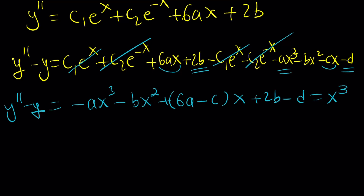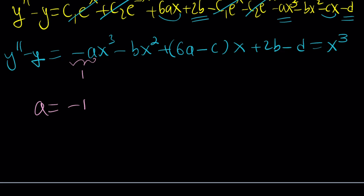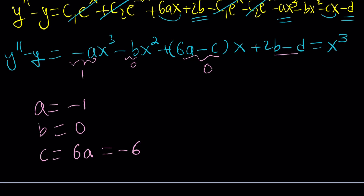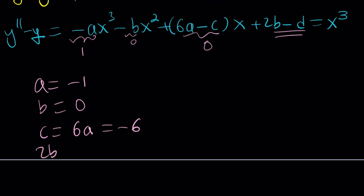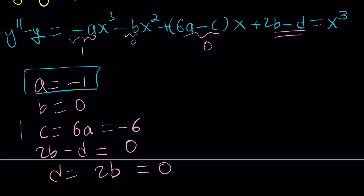We got a polynomial equation, which is easy to solve since it holds for all x values. The coefficient of x cubed must be 1, so negative a equals 1, meaning a equals negative 1. Since there is no x squared term, b equals 0. The coefficient of x must be 0, so 6a minus c equals 0, meaning c equals 6a, and since a is negative 1, c equals negative 6. Finally, 2b minus d equals 0; since b is 0, d is also 0.